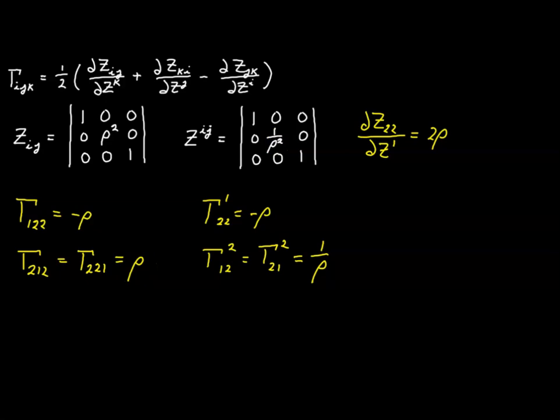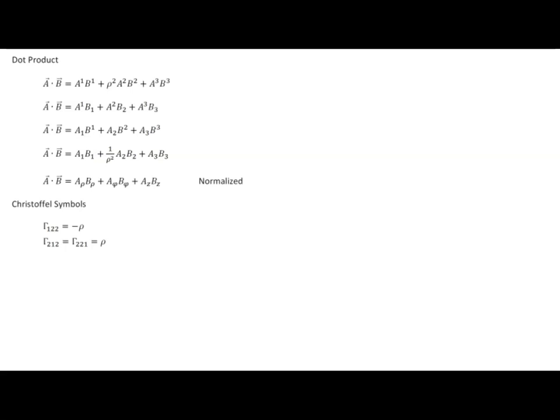On the cylindrical polar coordinate fact sheet, the Christoffel symbols of the first kind are Γ₁₂₂ = -ρ, Γ₂₁₂ = Γ₂₂₁ = ρ, and the Christoffel symbols of the second kind are Γ¹₂₂ = -ρ and Γ²₁₂ = Γ²₂₁ = 1/ρ — virtually identical to plane polar coordinates.